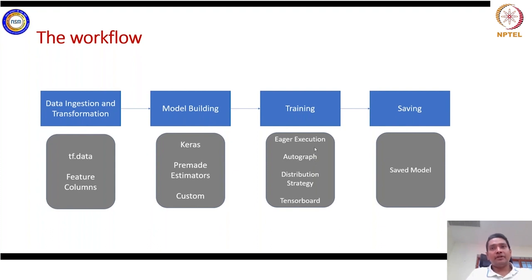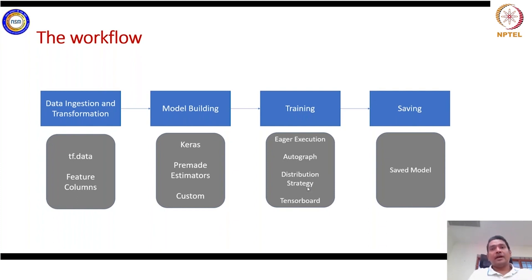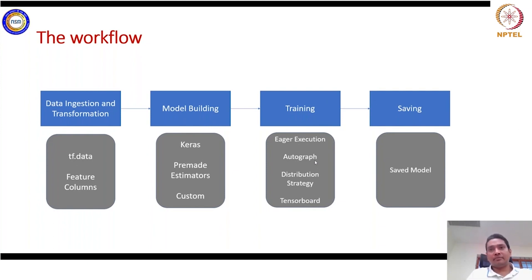We will see how to define all these explicit APIs to enhance efficiency. The distribution strategy, written in core C++, gives much more flexibility in terms of data parallelism, model parallelism, and pipeline parallelism. TensorBoard is a built-in tool which you will use to visualize and analyze your model and give it more boost in subsequent runs. In the end, you save the model and use it for deployment.